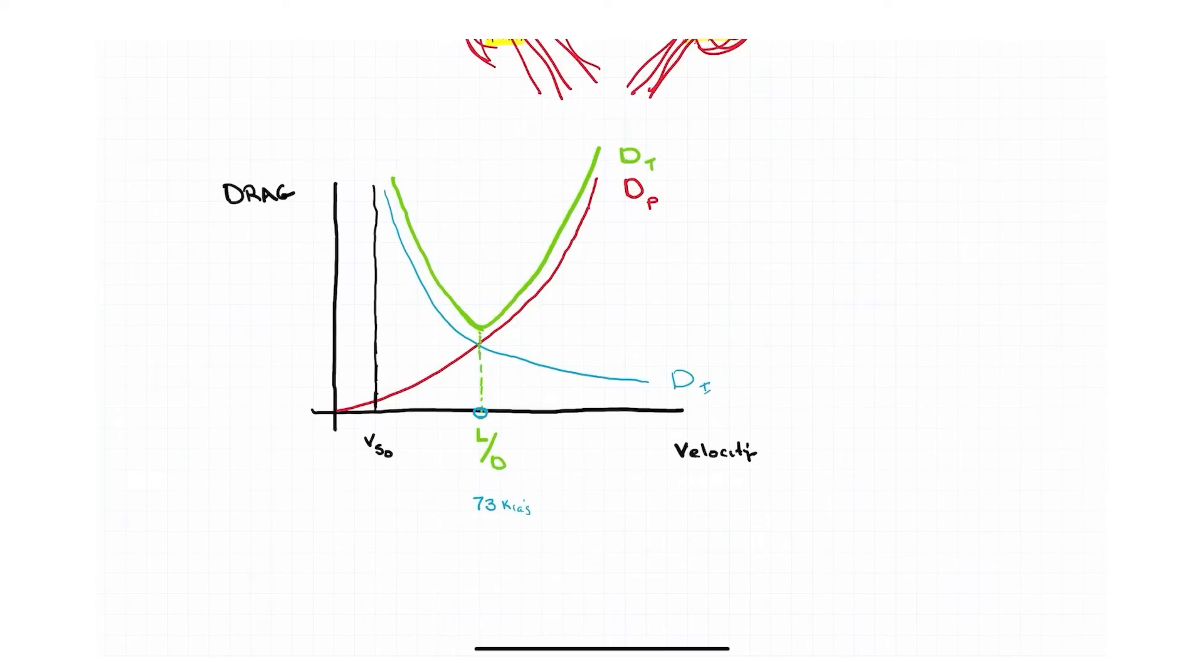So if we wanted to go faster than 73 knots, faster and faster we go, it's pretty obvious we would need more power. We know to go faster we need more power. So let's say that we decide to go this speed here. We run that all the way up to the total drag curve. We need enough power to overcome that much drag.